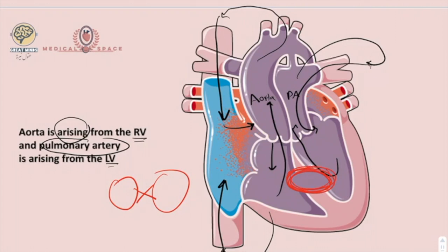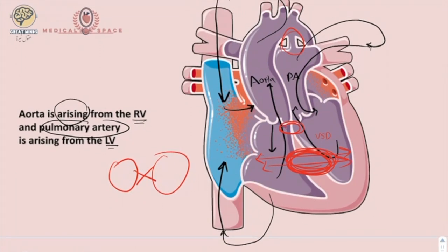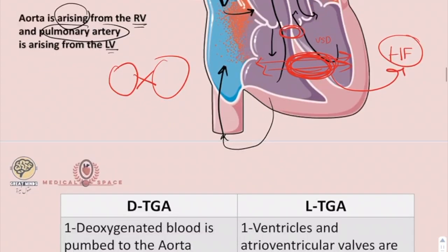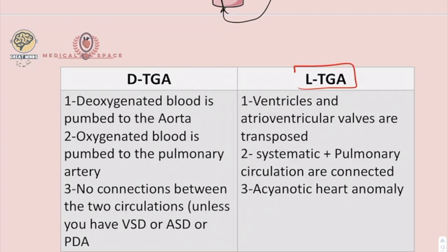Some connection is needed to mix the two circulations. These patients will usually present with a ventricular septal defect, an atrial septal defect, or a patent ductus arteriosus. If the patient has a patent ductus arteriosus, they will present with cyanosis more than heart failure. If the patient has a ventricular septal defect or atrial septal defect, they will present with symptoms of heart failure.